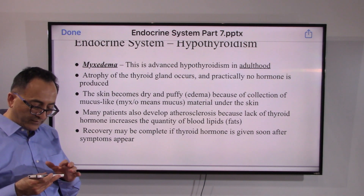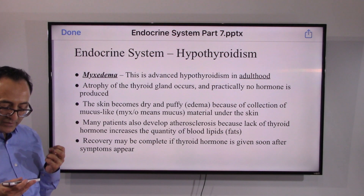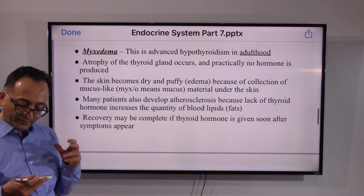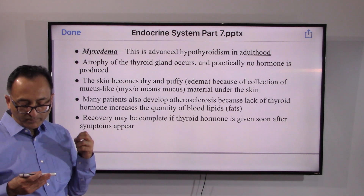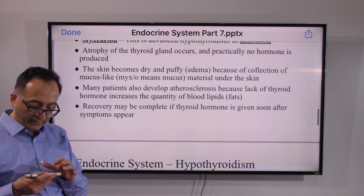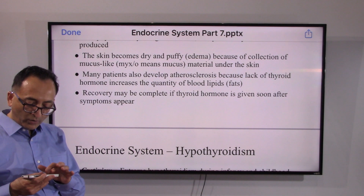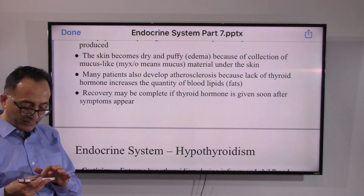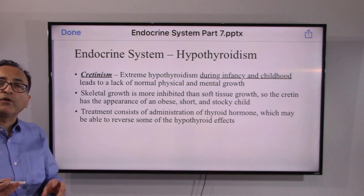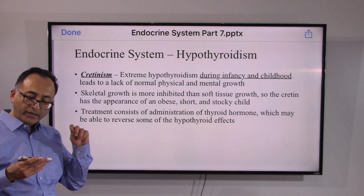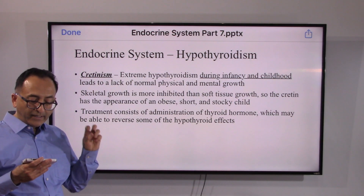With myxedema, the skin becomes dry and puffy, and sometimes it may lead to atherosclerosis, or the buildup of plaque in the arteries. Recovery may be complete if thyroid hormone is given soon after the symptoms appear. Another variation of hypothyroidism is when it occurs during infancy and childhood; if extreme, it is labeled as cretinism.